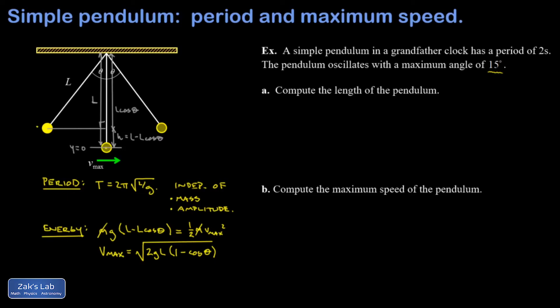Okay, let's apply these ideas to a simple example. I have a simple pendulum in a grandfather clock that has a period of two seconds. That's actually the way a full-size grandfather clock is constructed. And I have the amplitude of the oscillation is 15 degrees. So part A, compute the length of the pendulum. Well, this is just a way of turning around the period formula.